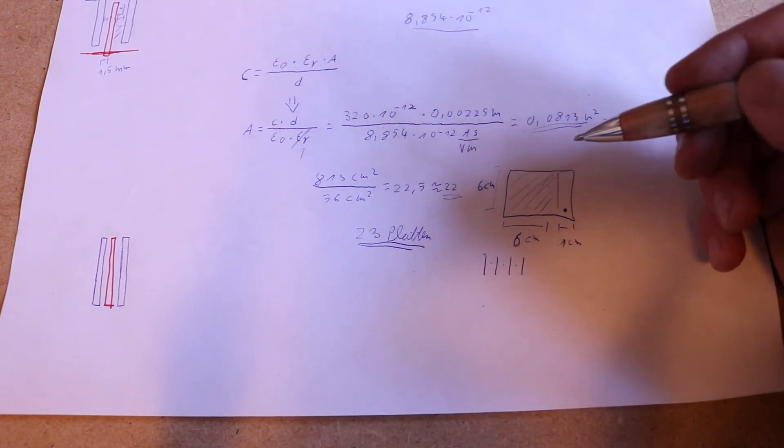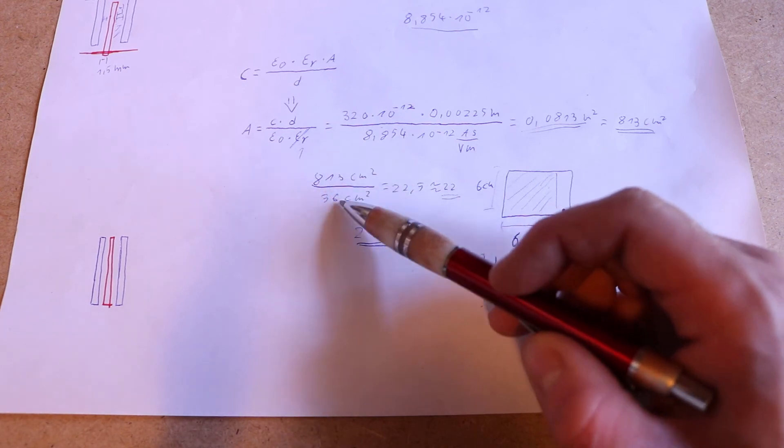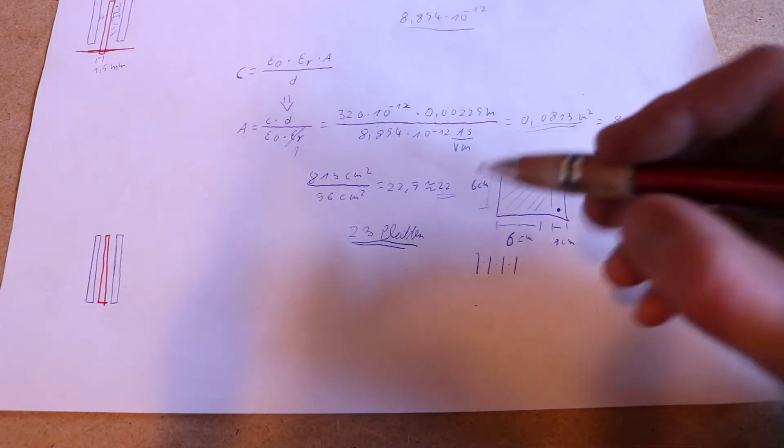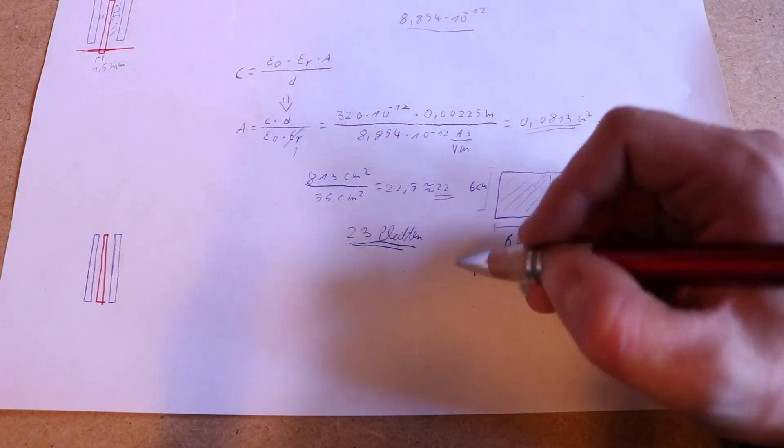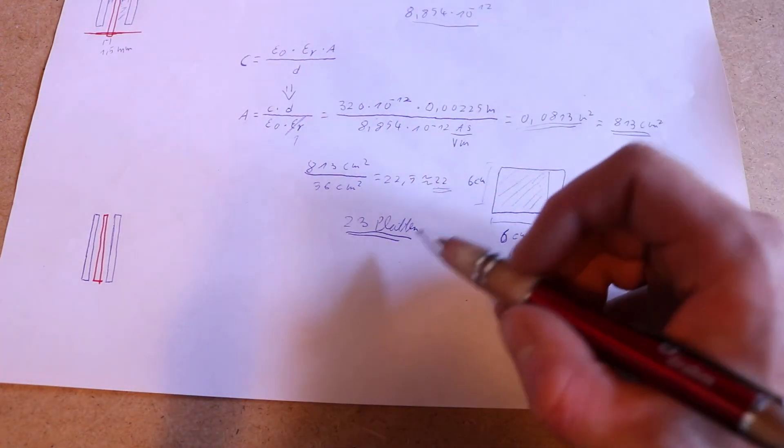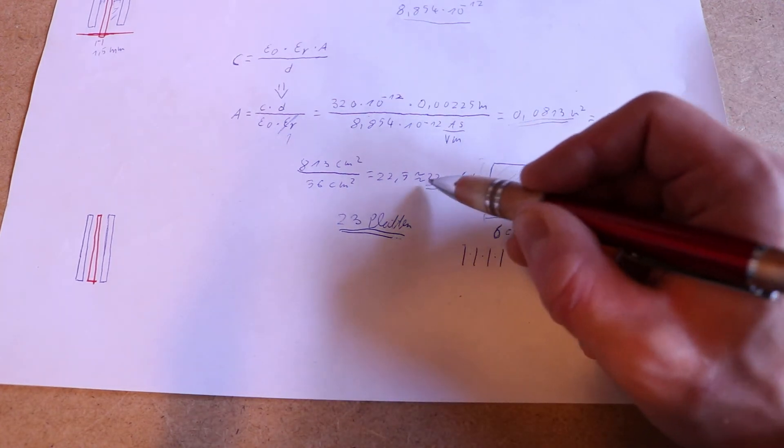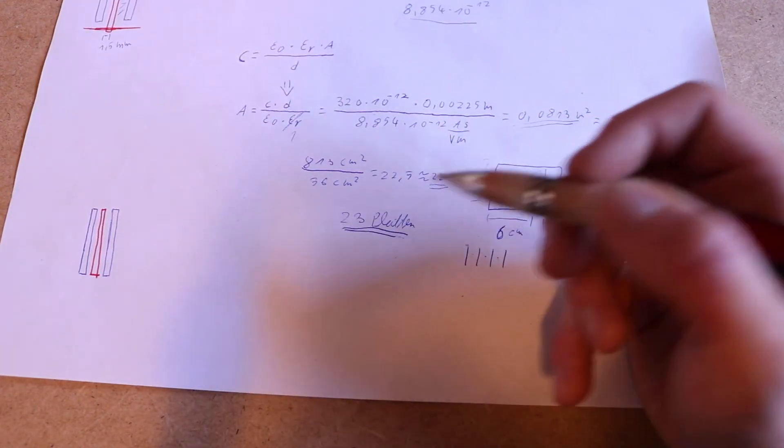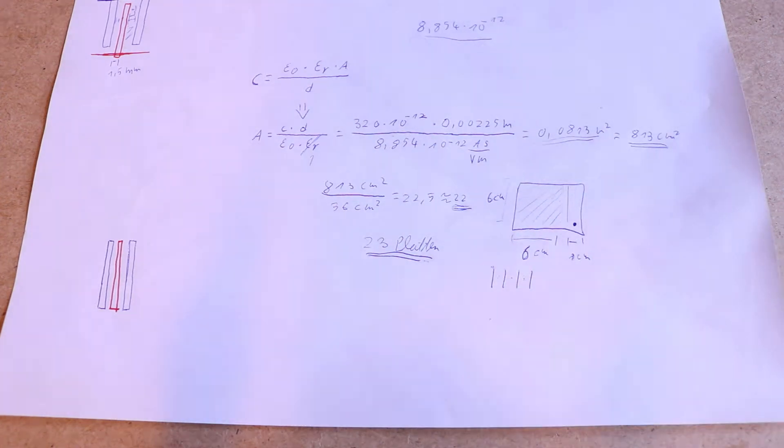To find out how many plates I need, I divide 813 centimeters squared by 36 centimeters squared, which gives me 22.5, around 22. But this is the area between the plates, so we need one more plate. It's 23 plates because we calculate the number of spaces between the plates, and if we have, for example, three spaces, we need four plates—always one plate more than the number of spaces.